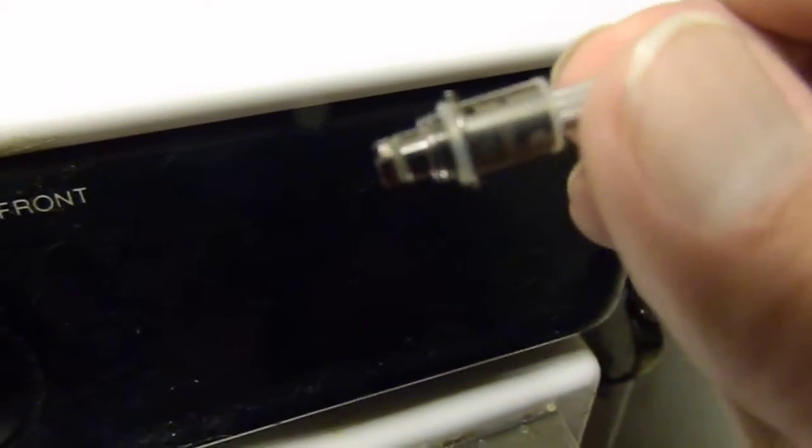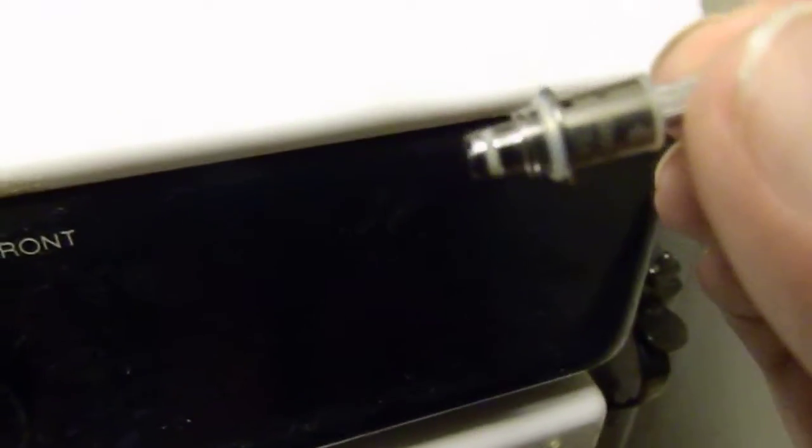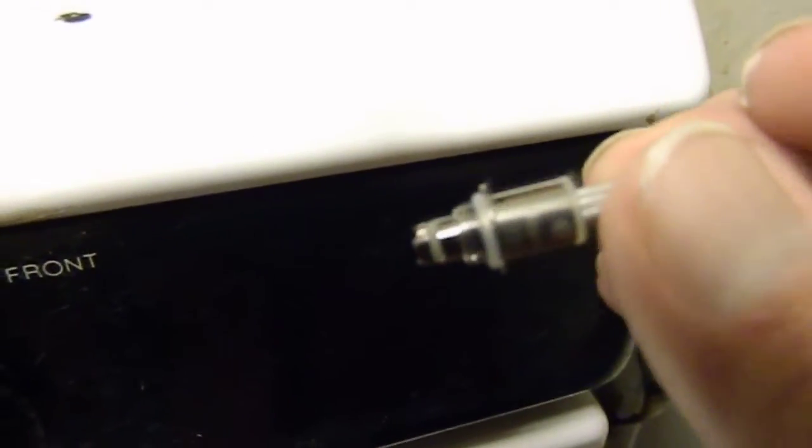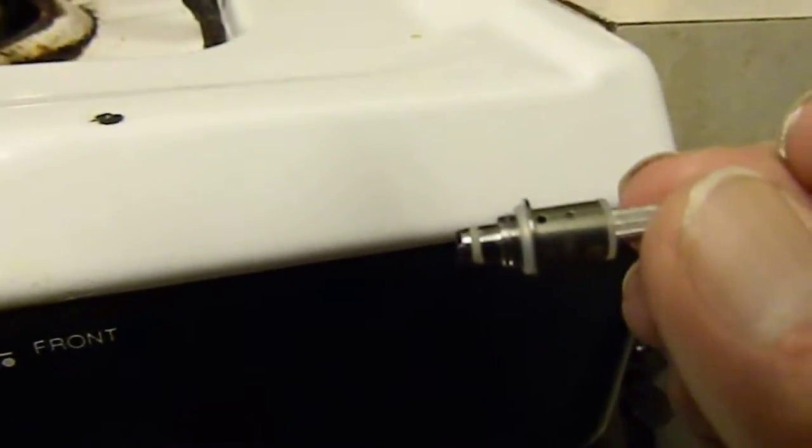In any case, unless you want to take the atomizer completely apart, remove this piece up here, or dry burn it, which I don't recommend, just soak it in alcohol for 24 hours. You can soak it longer, but leave it for a minimum of 24.